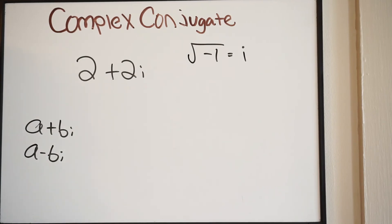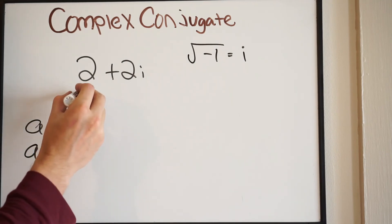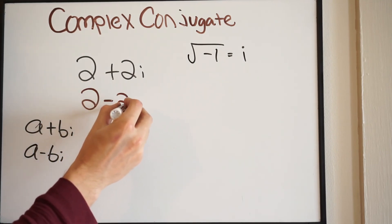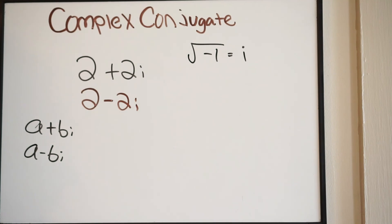Now, if you're taking the square root, we know that we're going to have plus or minus. So again, when you take the square root of something, it's going to be plus or minus. So in that case, if we have 2 plus 2i, that means that 2 minus 2i must also exist. And we call this the complex conjugate.